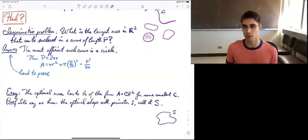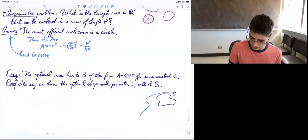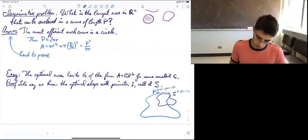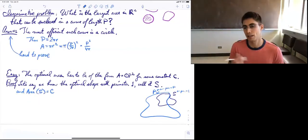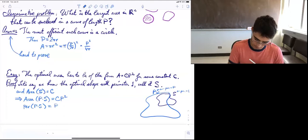That just comes from the fact that in the plane, we can scale things. So let's say we just know the optimal shape with perimeter one, and let's call that shape s. We can scale it up and get a shape ps. This is p times s. So this has perimeter one, so this shape has perimeter p. And let's say the area of s is c. That means that the area of p times s is cp² and the perimeter of p times s is p.